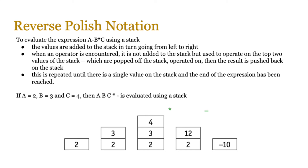Let's look at a worked example. Instead of A, B, and C, we have values 2, 3, and 4, and our expression ABC star minus is evaluated as follows. First we push 2 into the stack, then 3, then 4. Then we encounter the star operator and pop 3 and 4 out — 3 times 4 is 12 — and push 12 back in. So now we have 2 and 12 in the stack. Then we encounter the minus operator, so we subtract: 12 minus 2 gives minus 10. There's only one value left in the stack, and that is your answer.